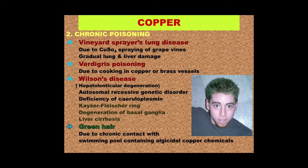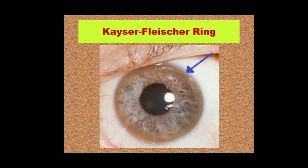This is the Kayser-Fleischer ring — look at the arrow at the rim of the cornea of the eye; you can see a slightly brownish colored ring. That is very important and diagnostic for Wilson's disease.